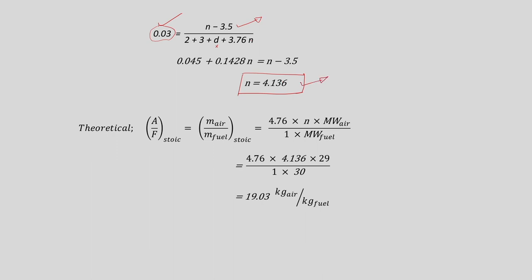This indicates that 4.136 moles of air are required to burn ethane (C2H6) in the combustion chamber. Based on this value, we can also calculate the theoretical air-to-fuel ratio required for the combustion process.